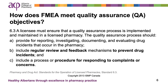You can use FMEA to meet requirements B and C of SOLP 6.3, which states that a licensee must ensure that a quality assurance process is implemented and maintained in a licensed pharmacy. The quality assurance process should include regular review and feedback mechanisms to prevent drug incidents, and include a process or procedure for responding to complaints or concerns. This will help your pharmacy team to meet the ultimate goal of FMEA: to prevent harm from reaching a patient.